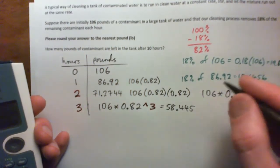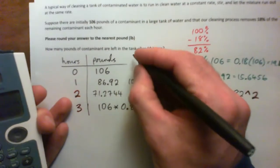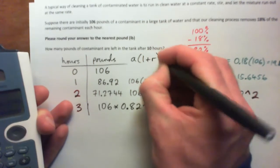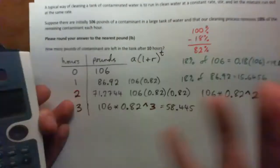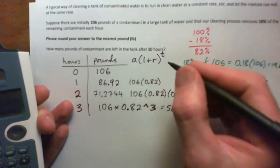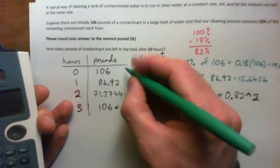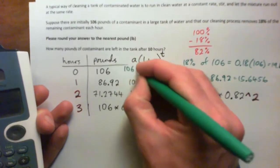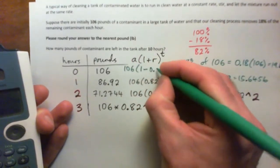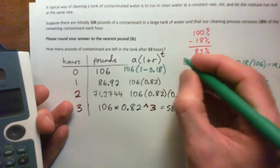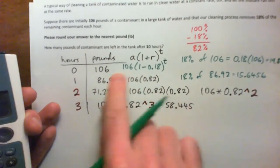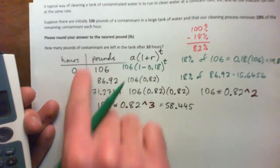And by the way, it looks like this: the initial amount a times one plus the rate to the power of t. That's an exponential form. In fact, it's one minus r, you could say. So our formula, as you can see, is shaping up to be 106 times one minus 0.18 to the power of t, the number of hours. So that's our exponential formula for this.